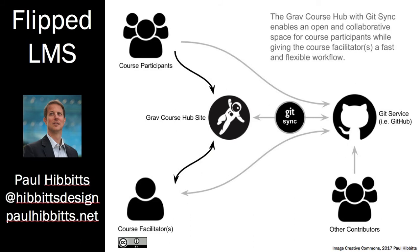Paul Hibbitts has this idea of a flipped LMS. He uses a system called Grav CMS — a standalone static site generating system, kind of like WordPress or Drupal, that manages things in Markdown. He actually routes students to all the different places they're going to go through this course hub site. Using a little bit of glue to stitch the experience together, he expands the worldview beyond just the old LMSs of yesterday.